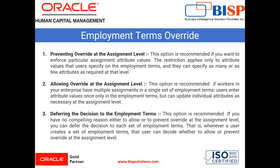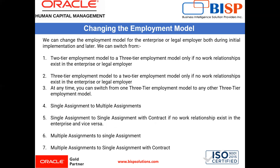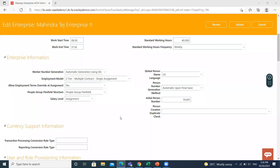Next is changing the employment model. We can change the employment model for the enterprise or legal employer both during initial implementation and later. We can switch from a two-tier employment model to a three-tier employment model only if no work relationship exists in the enterprise or legal employer. We can switch from three-tier to two-tier, three-tier to any other three-tier, single assignment to multiple assignment, single assignment to single assignment with contract if no work relationship exists, and vice versa — multiple assignment to single assignment or single assignment with contract.